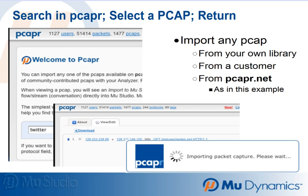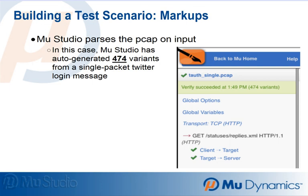There are many other sources for PCAPs, including QA may capture packets to attach to a bug report during development. Customers may report issues and provide corresponding PCAPs. You may have a regression library of interesting PCAPs. Once a PCAP has been imported, Mu Studio's editor allows users to mark up the PCAP sequence.